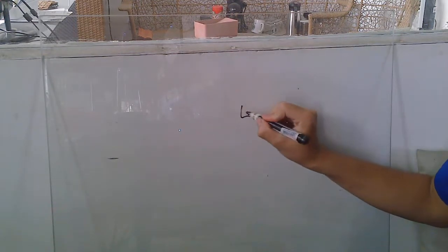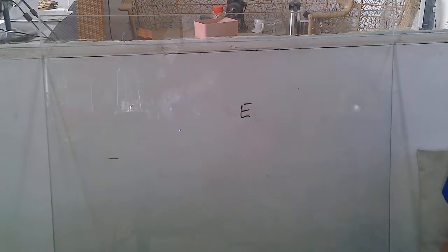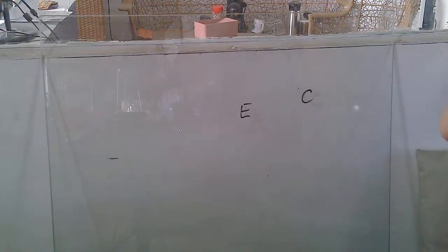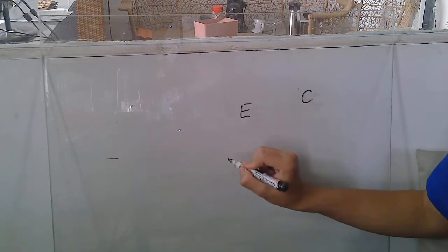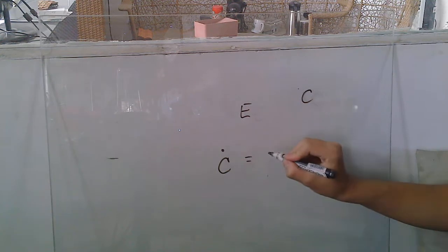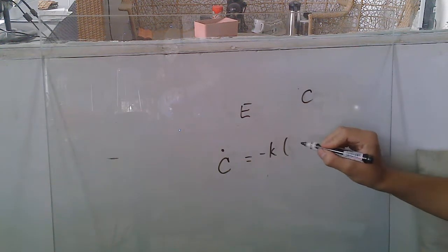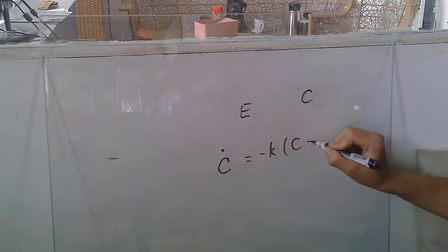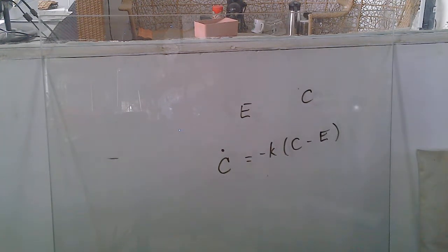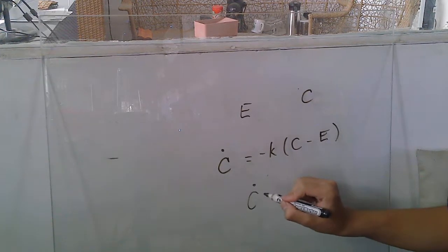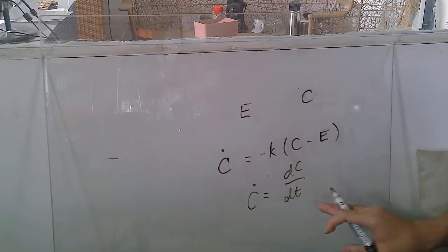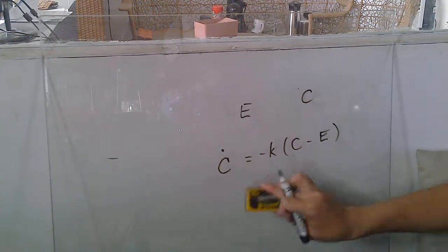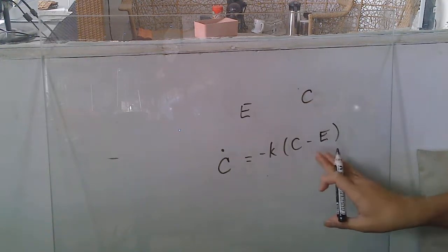Now, in the context of our study, if we let E denote the external conditions, and we have C, the condition of the specimen, our differential equation becomes C dot equals negative K times C minus E. Where C dot is equal to dC/dT. Capital C dot, not small C dot. And so, we're given some initial condition, initial temperature.